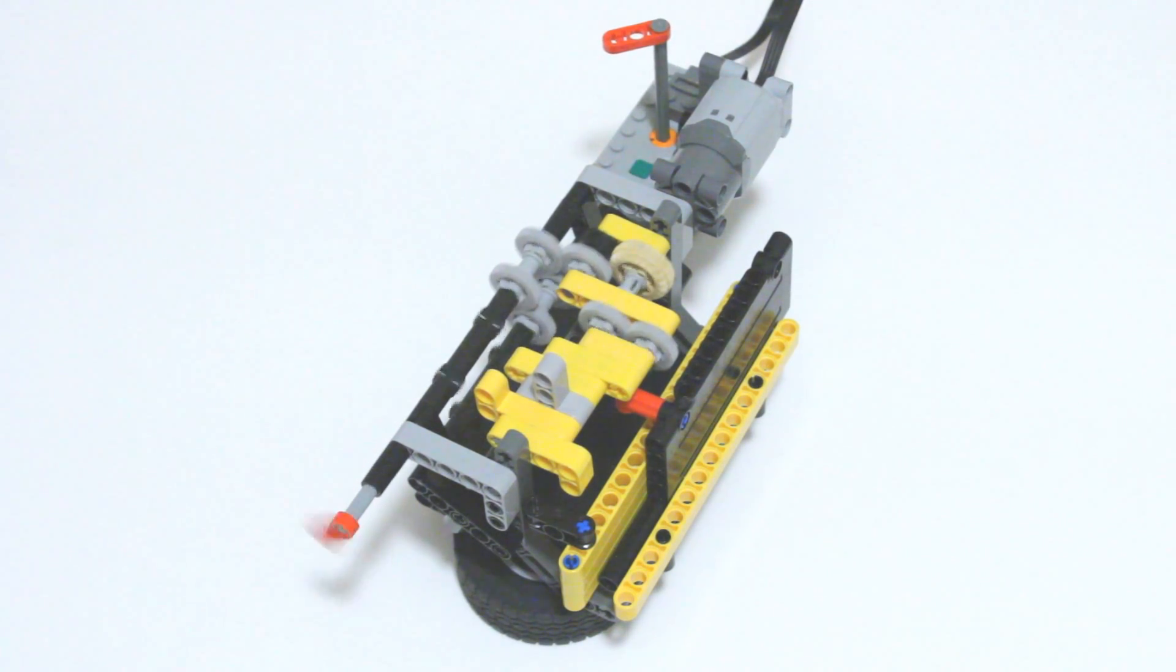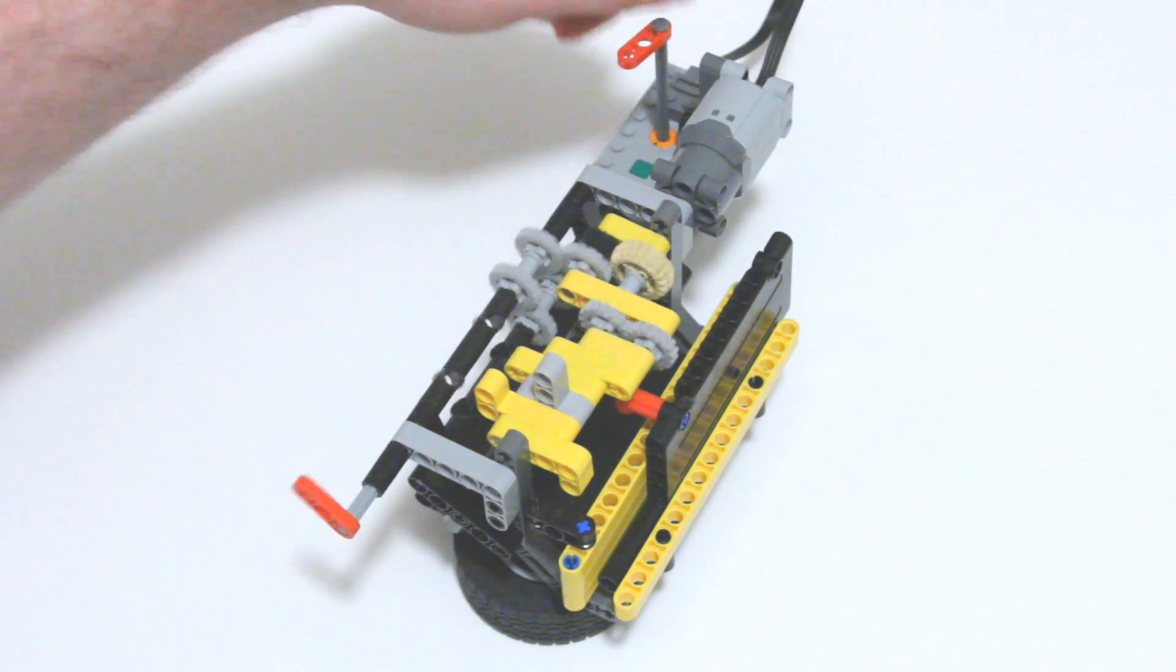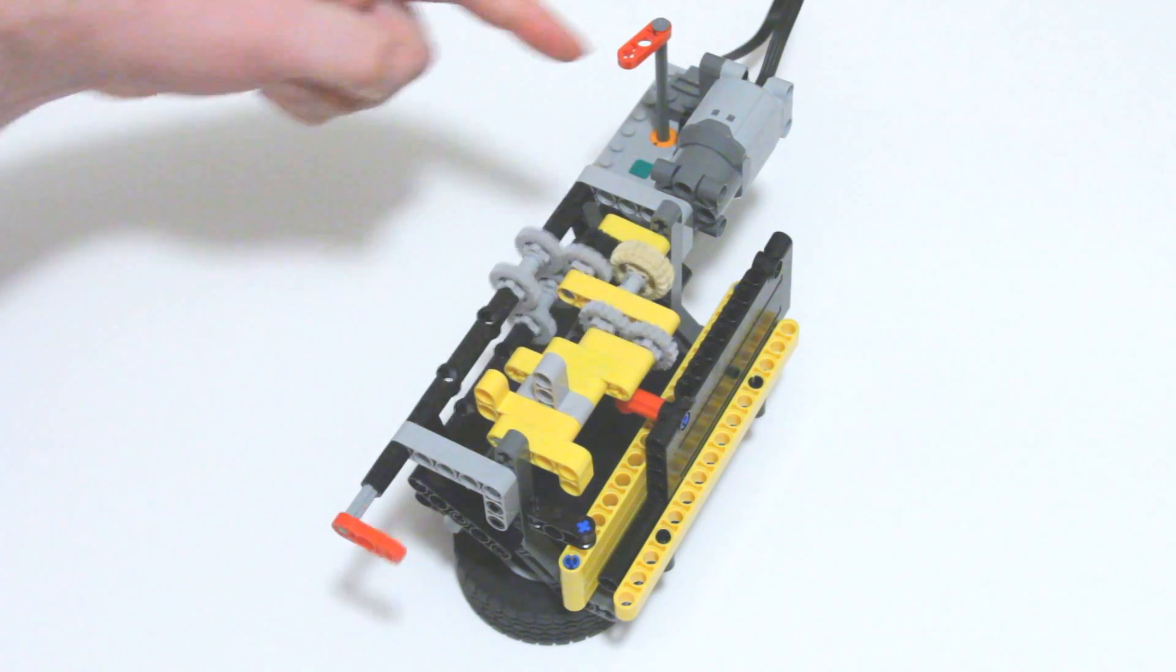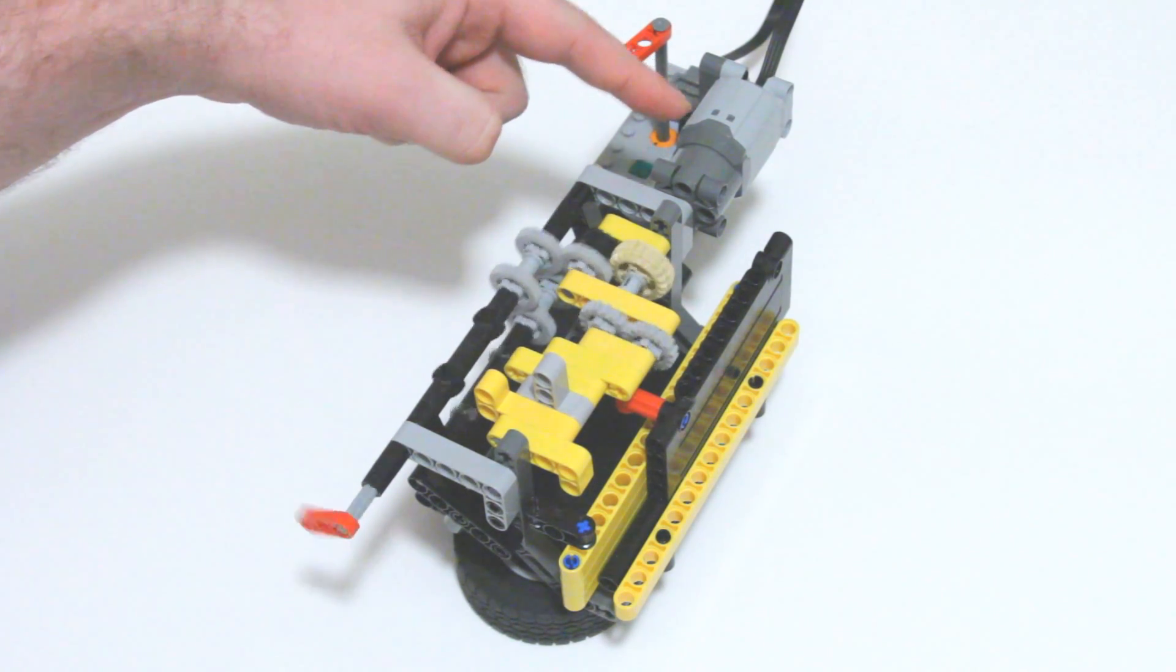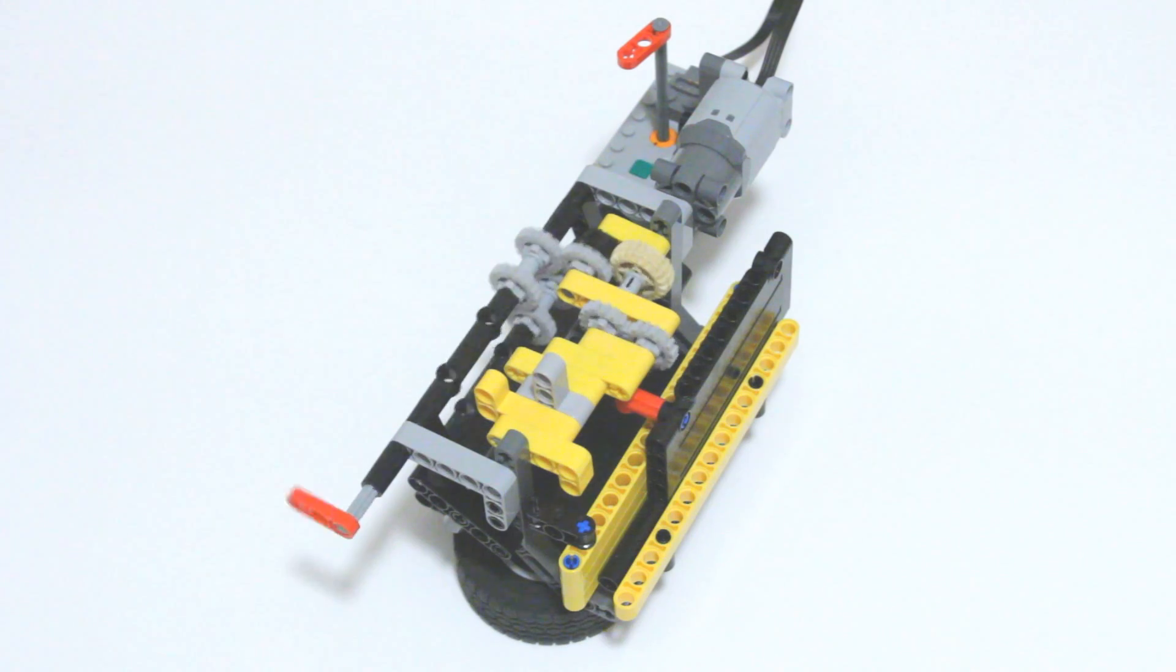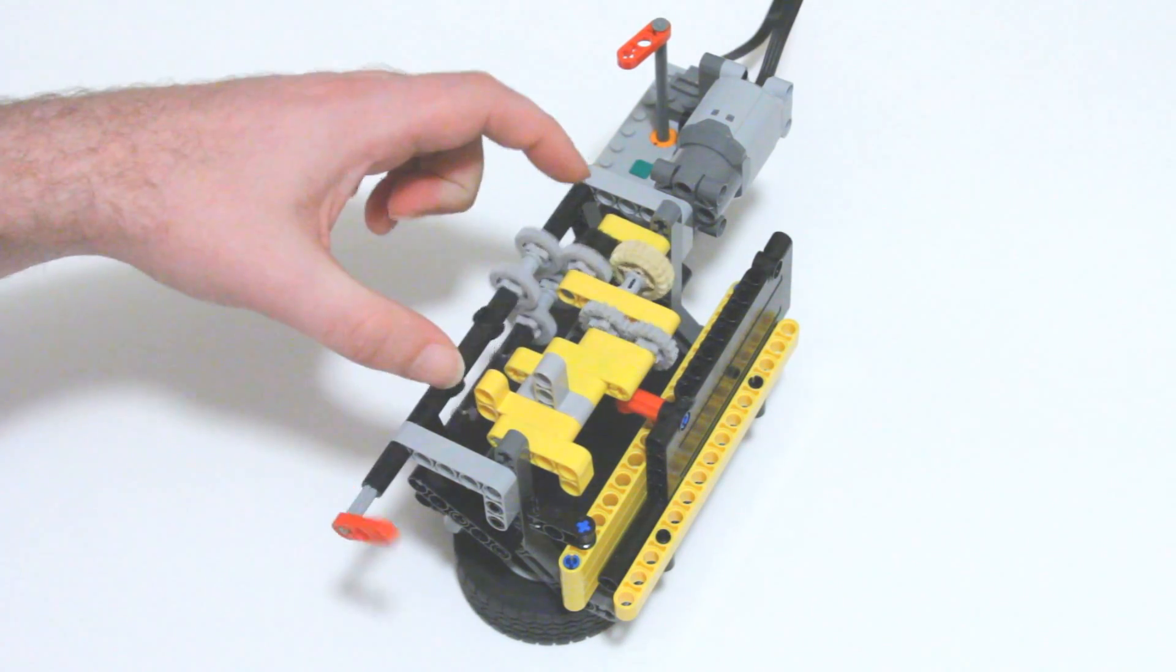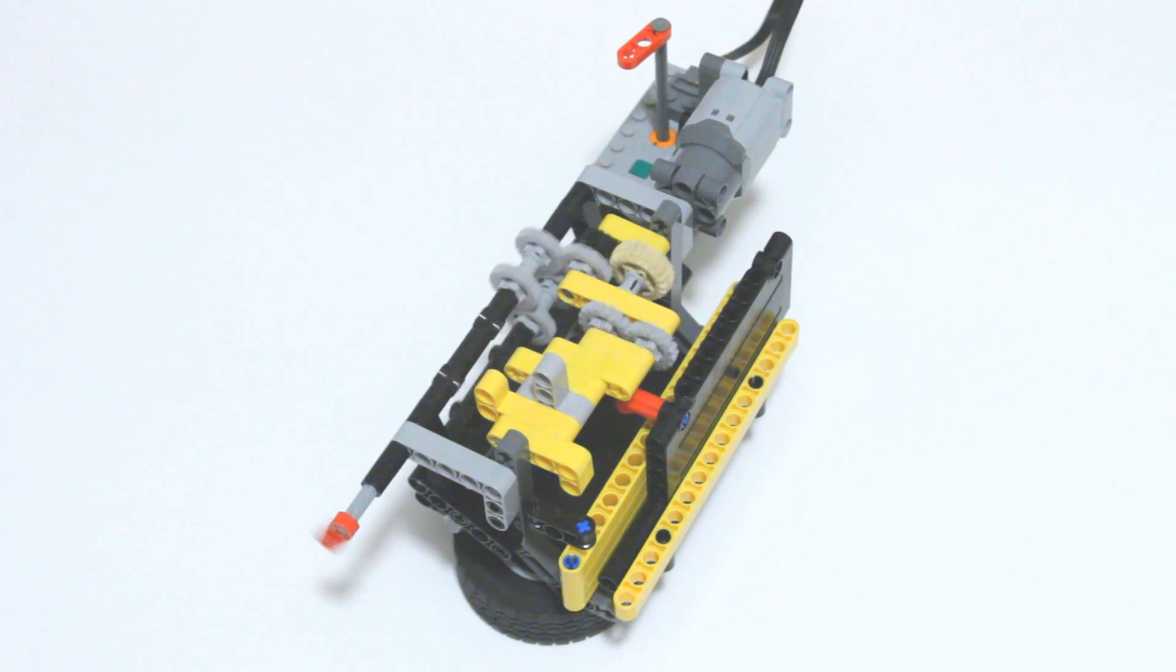So to see how this works, let me slow it down a little bit. Now what we have is a motor here that's being run the whole time, and it's running an axle that goes through the middle. Now that axle goes straight through the middle of this yellow frame, however they're not attached to each other.